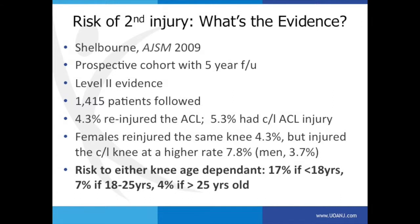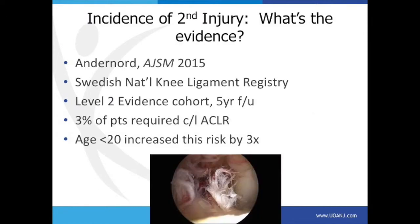He also noted that females had a much higher rate of injury of the contralateral healthy knee, almost 8%. Furthermore, these re-injuries were age-dependent. If you were less than 18 years old, you had a 17% chance of an injury to the graft or a new injury to the contralateral side. If you were 25, your risk was much less. More recently, Andrew Nord had a level two study from the Swedish National Ligament Registry, noting that 3% of patients required a contralateral ACL reconstruction — but if the patients were younger than 20, this risk increased by three times.